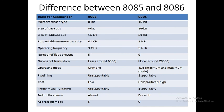Pipelining: where there are 6 instructions in a queue, unsupportable in 8085 but supportable in 8086. Cost is low in 8085 but in 8086 it is comparatively high. Memory segmentation: unsupportable in 8085, supportable in 8086. Instruction queue is absent in 8085 but present in 8086.